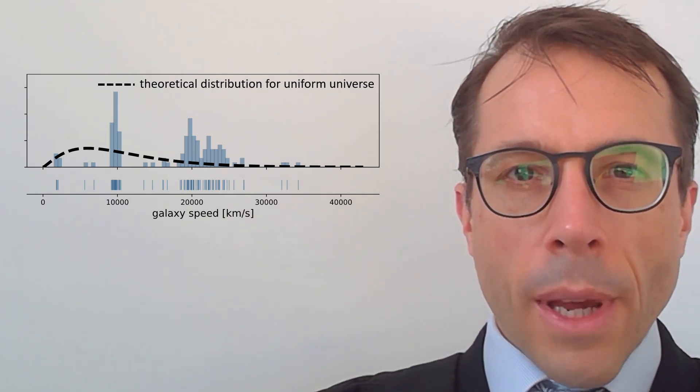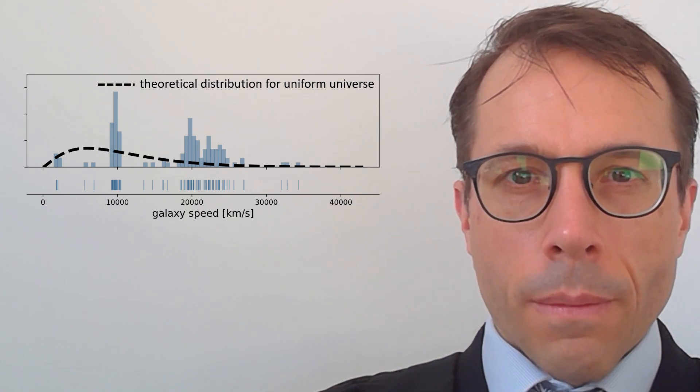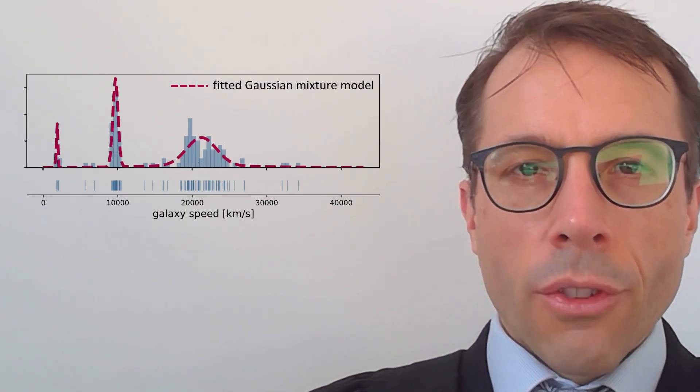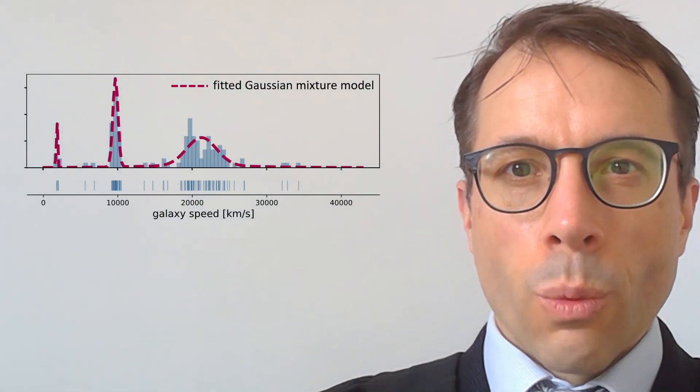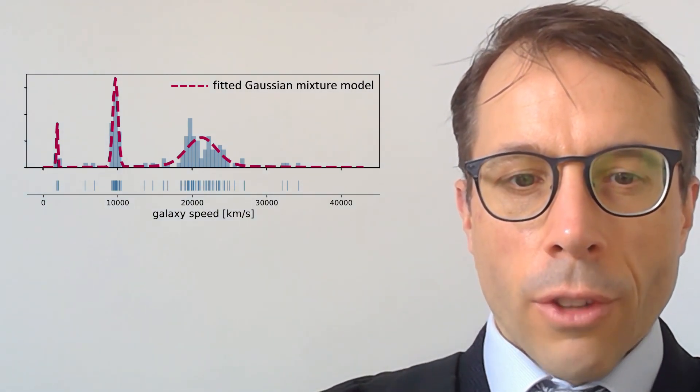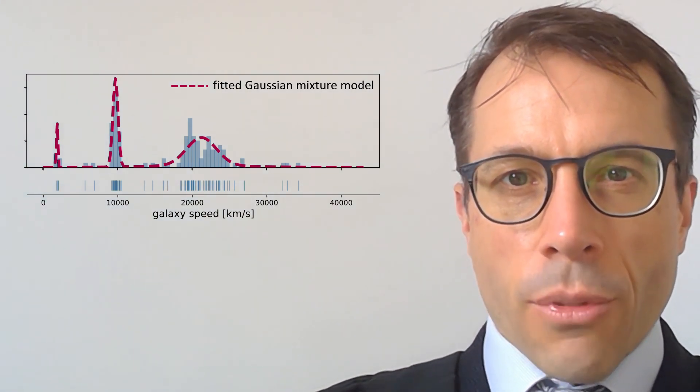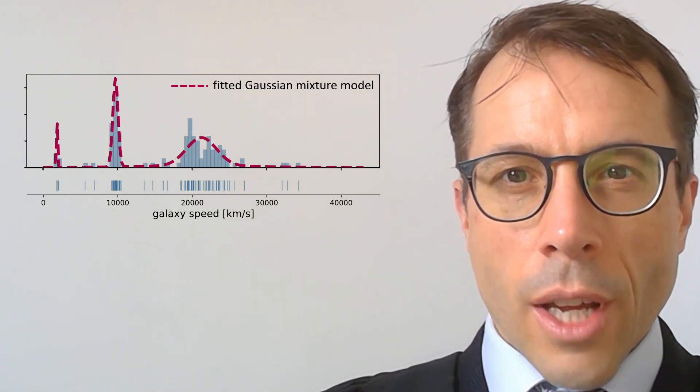But what would be a better fit for this dataset? Here's a fit we looked at in section 1.6, a Gaussian mixture model with three components. It looks like it fits much better. Perhaps there are three filaments of galaxies in our neighbourhood of the universe.